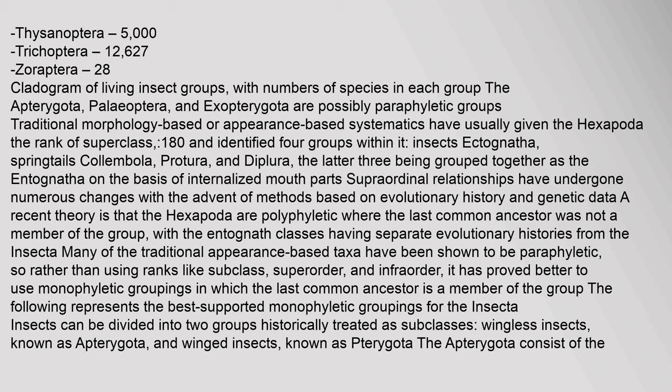Superordinal relationships have undergone numerous changes with the advent of methods based on evolutionary history and genetic data. A recent theory is that the hexapoda are polyphyletic, where the last common ancestor was not a member of the group, with the Entognath classes having separate evolutionary histories from the Insecta. Many of the traditional appearance-based taxa have been shown to be paraphyletic, so rather than using ranks like subclass, superorder, and infraorder, it has proved better to use monophyletic groupings.